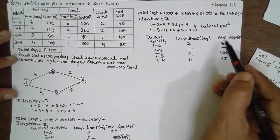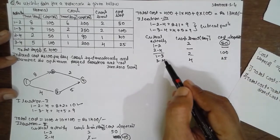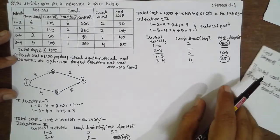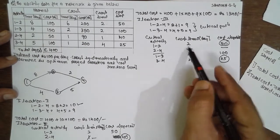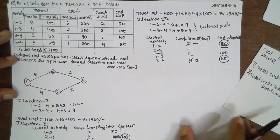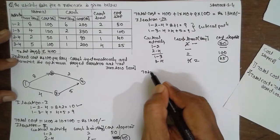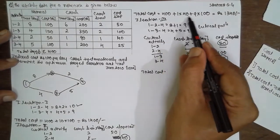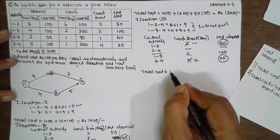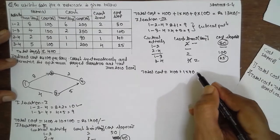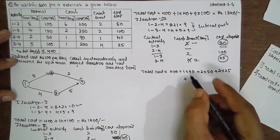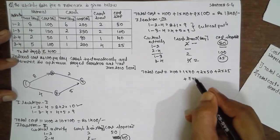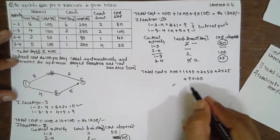We can crush by 2 only, because activity 1-2 is limited to a crash limit of 2. So crush activity 1-2 by 2 and activity 3-4 by 2. Total cost: 400 plus 1 into 40 plus 2 into 50 plus 2 into 25, plus indirect cost. After crushing it becomes 7, so 7 into 100. The answer is rupees 1290.